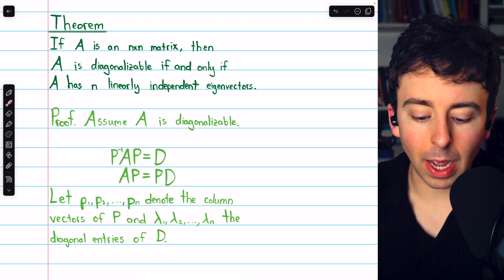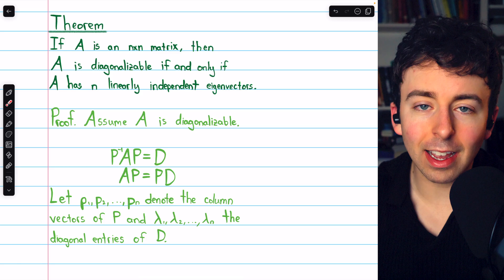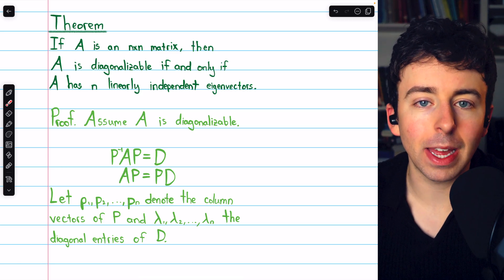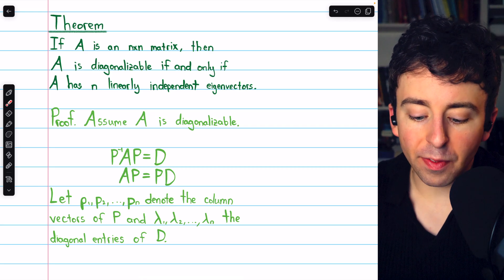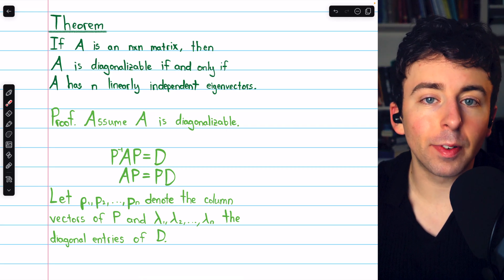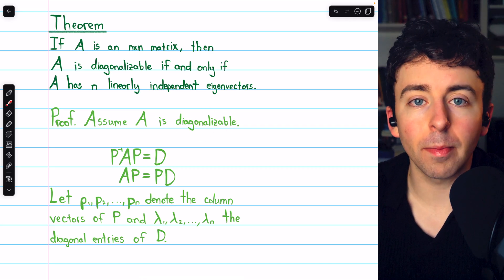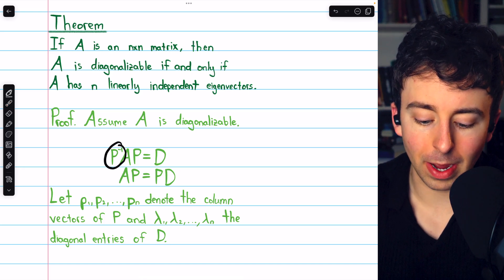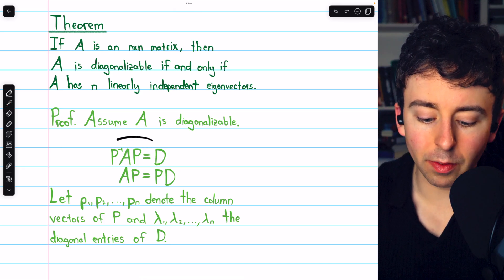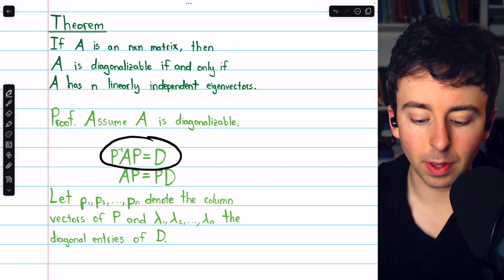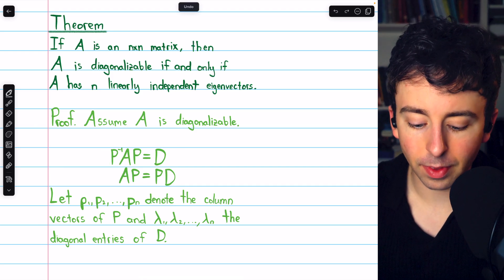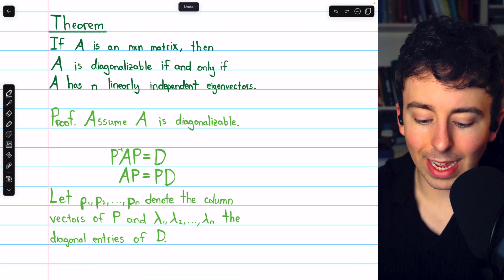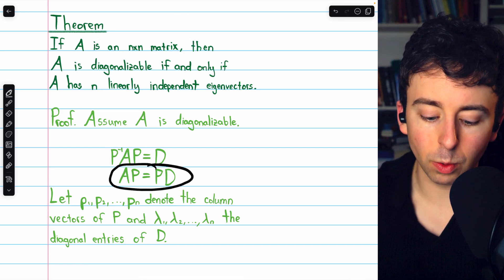Let's begin by assuming A is diagonalizable and proving it has n linearly independent eigenvectors. If A is diagonalizable, by definition it's similar to some diagonal matrix. Hence, there exists some invertible matrix P so that P inverse AP equals a diagonal matrix D. Multiplying both sides on the left by P, we get that AP equals PD.